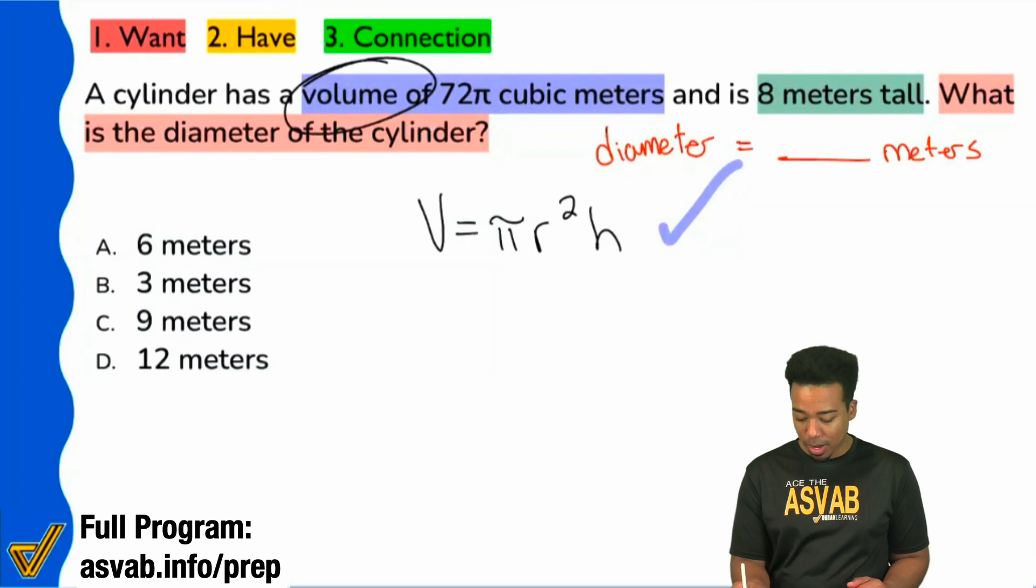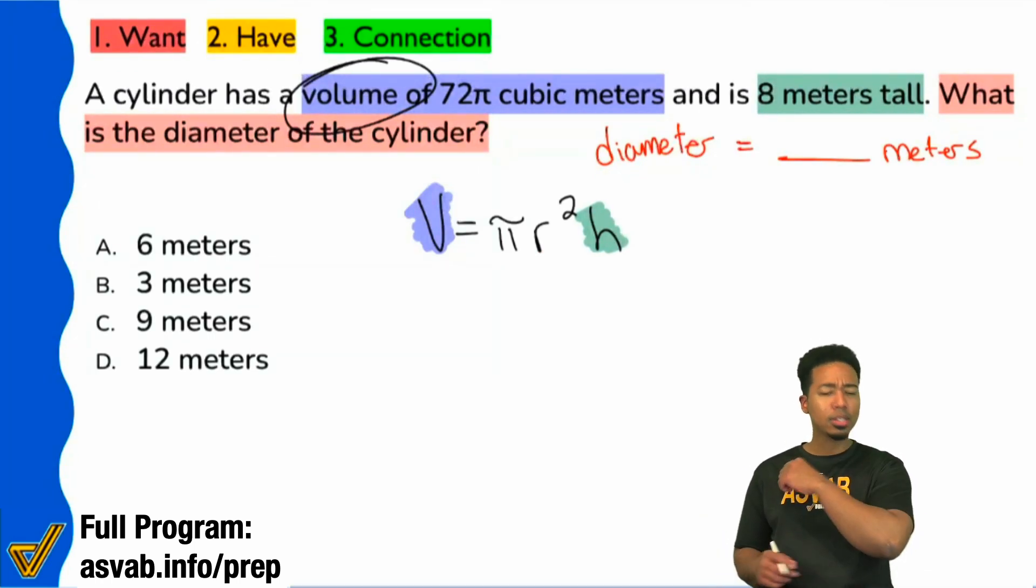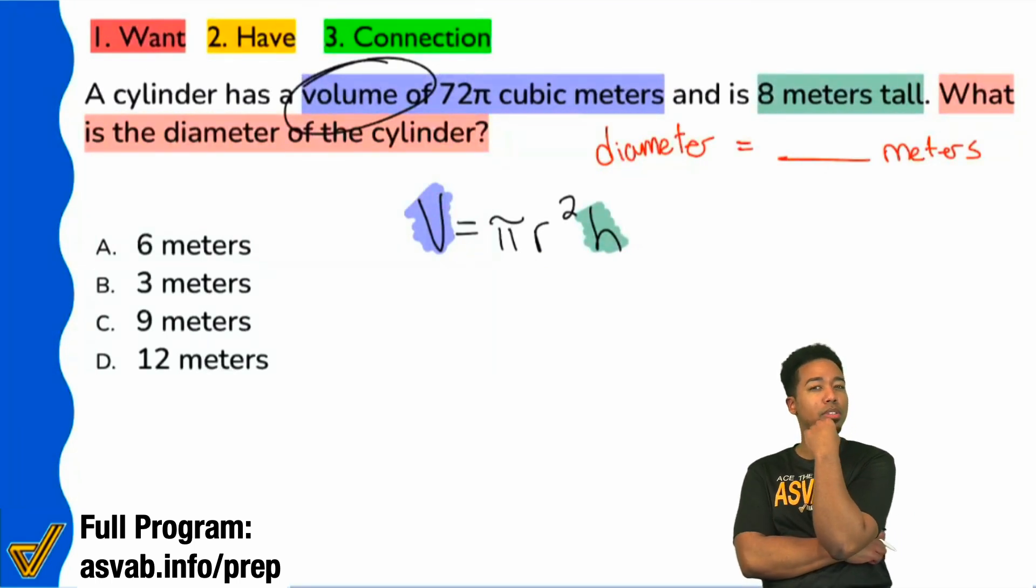Let's go ahead and include the information that we have. We know that we are given the volume and we are also given the height. So it looks like we can find this r right here. So everybody hit me up again, what did we say the volume was? What was the volume that was given to us here? What was the volume?